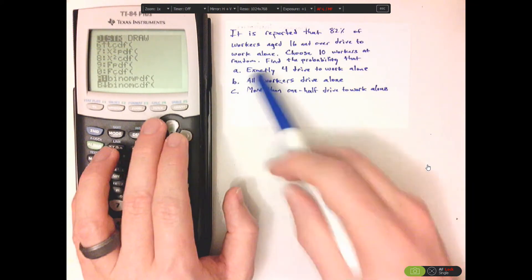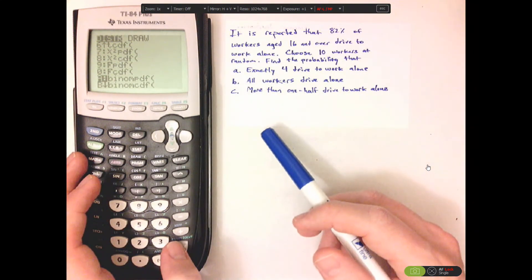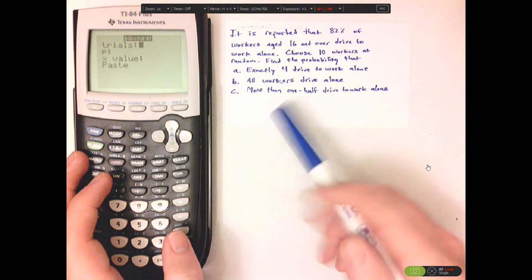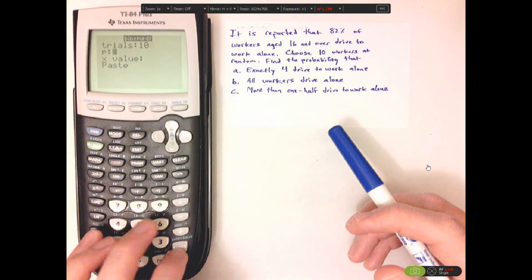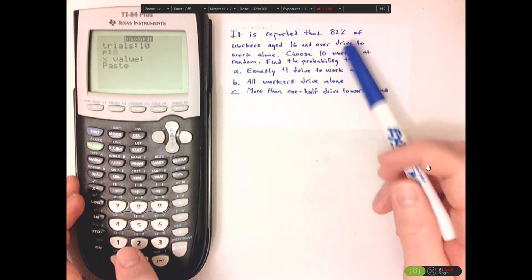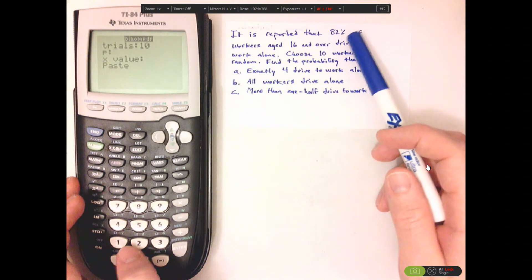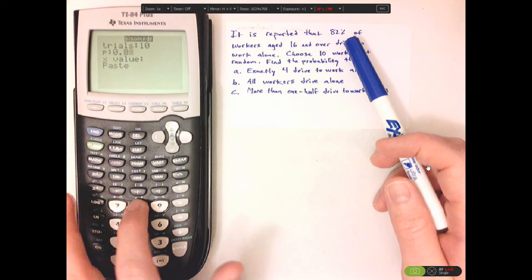All right, so for A and B, we're going to use that first one. All right, the number of trials. Now we're going to put 10. P stands for probability. Our probability here is 82%. Type that in as a decimal. 0.82.